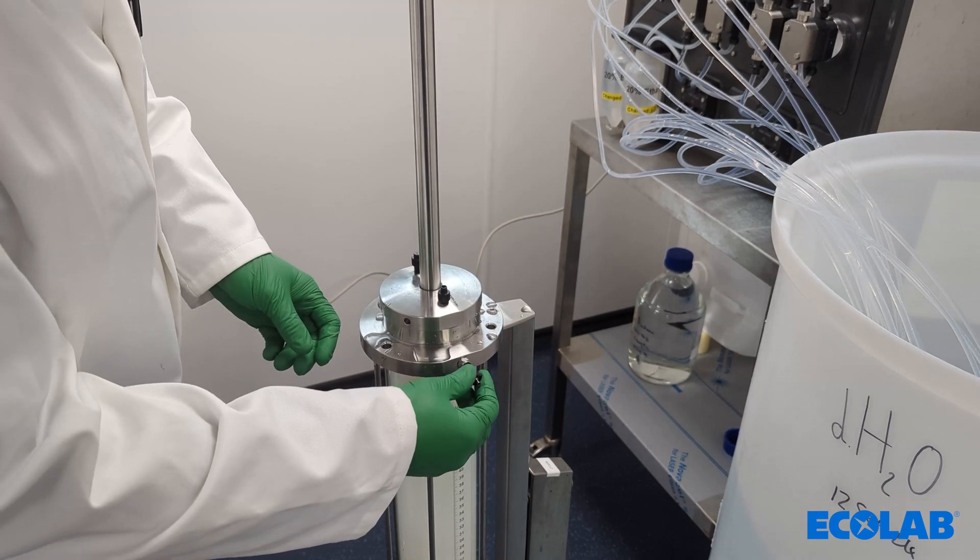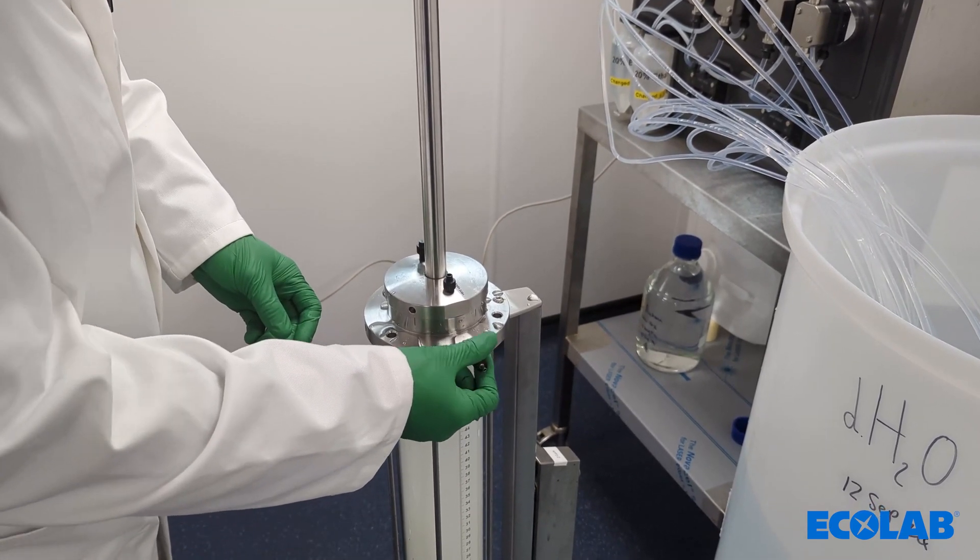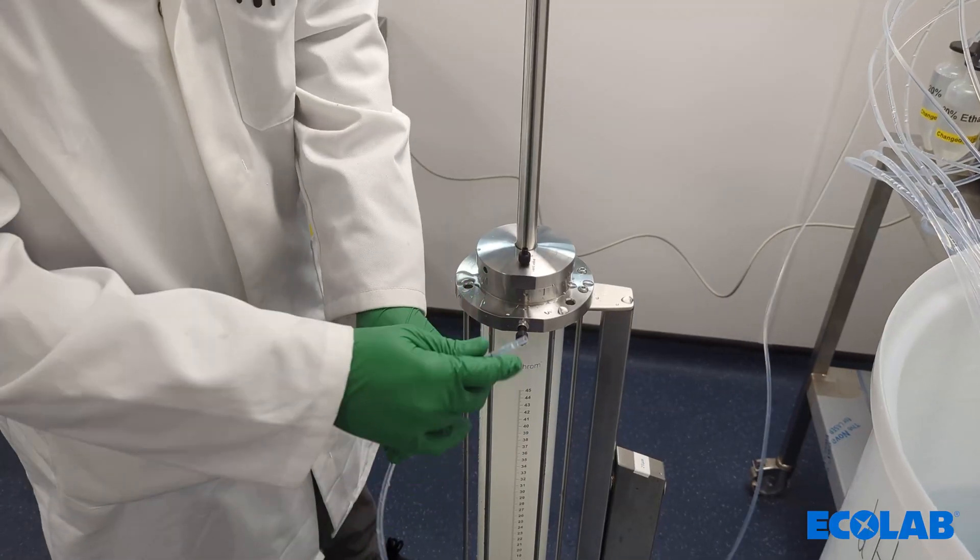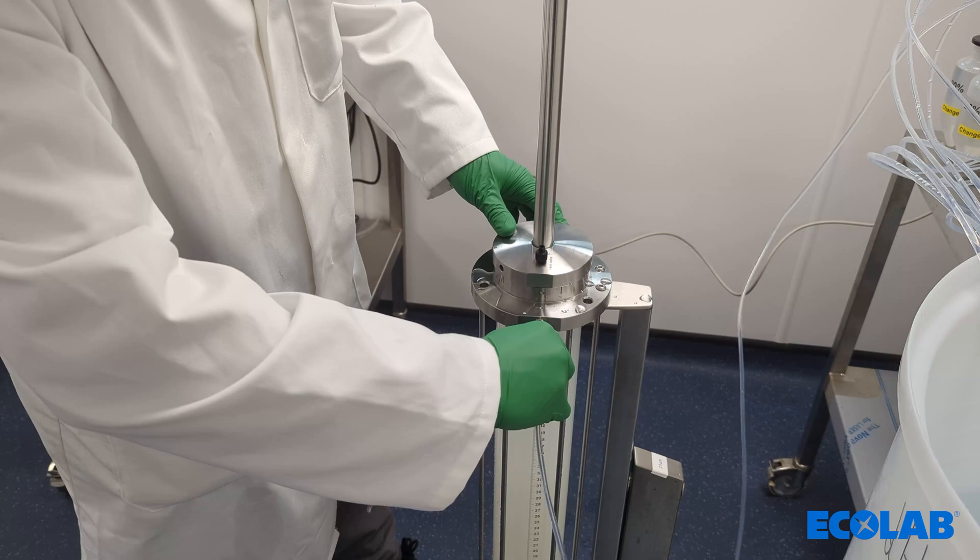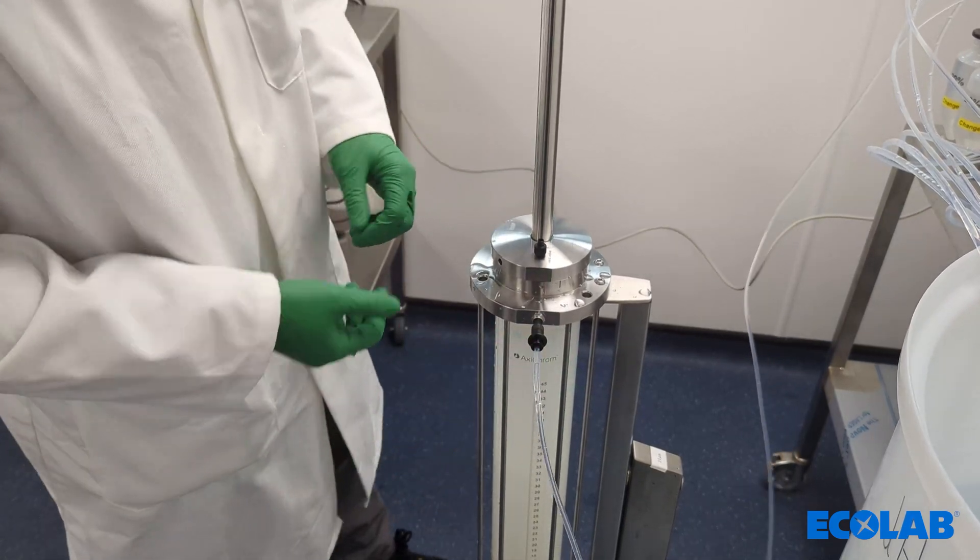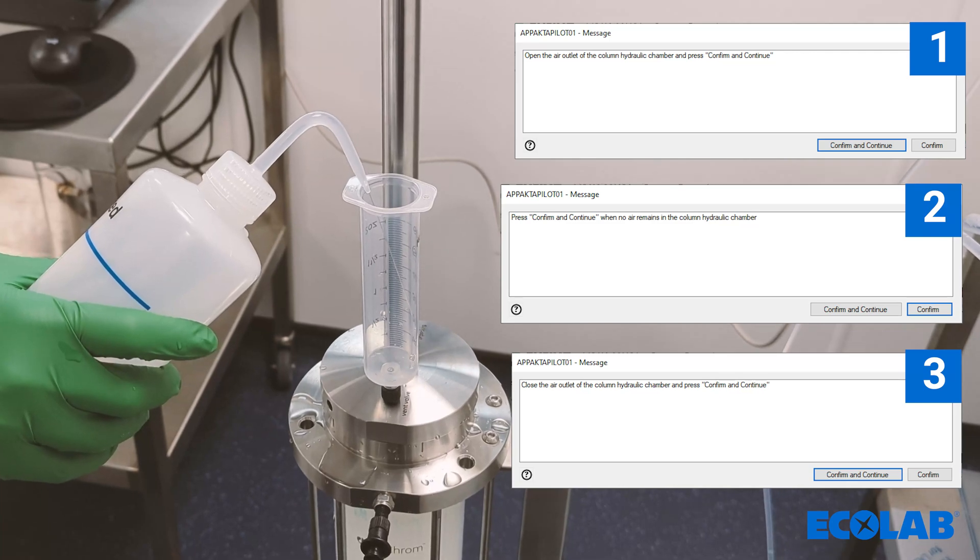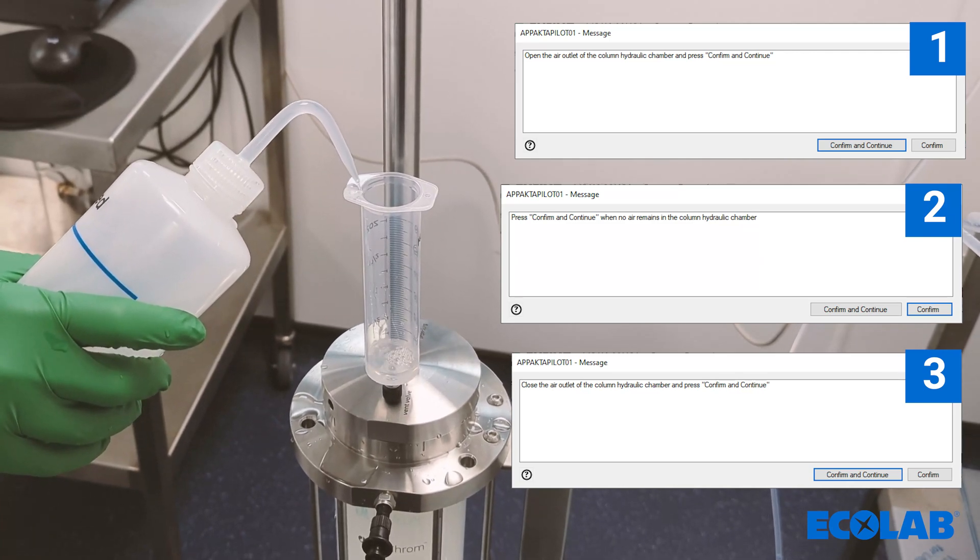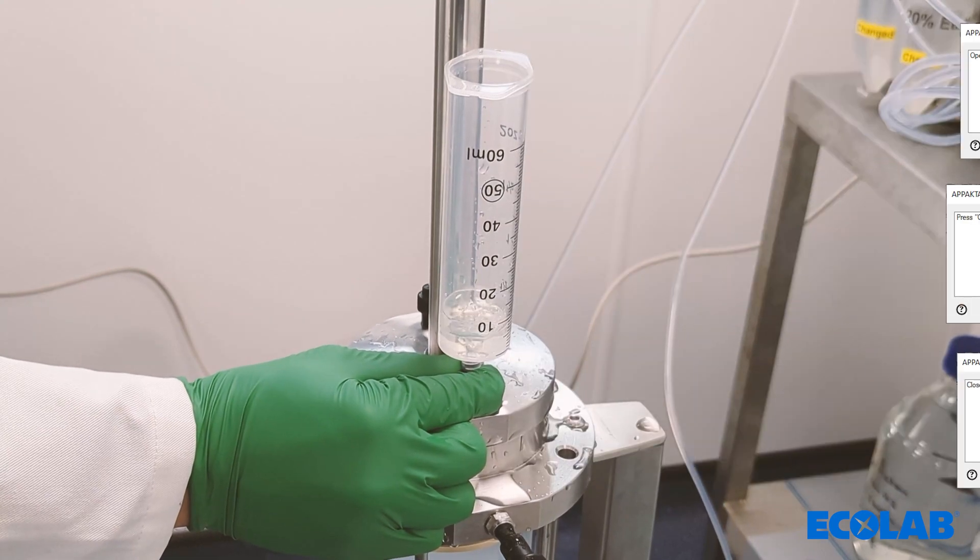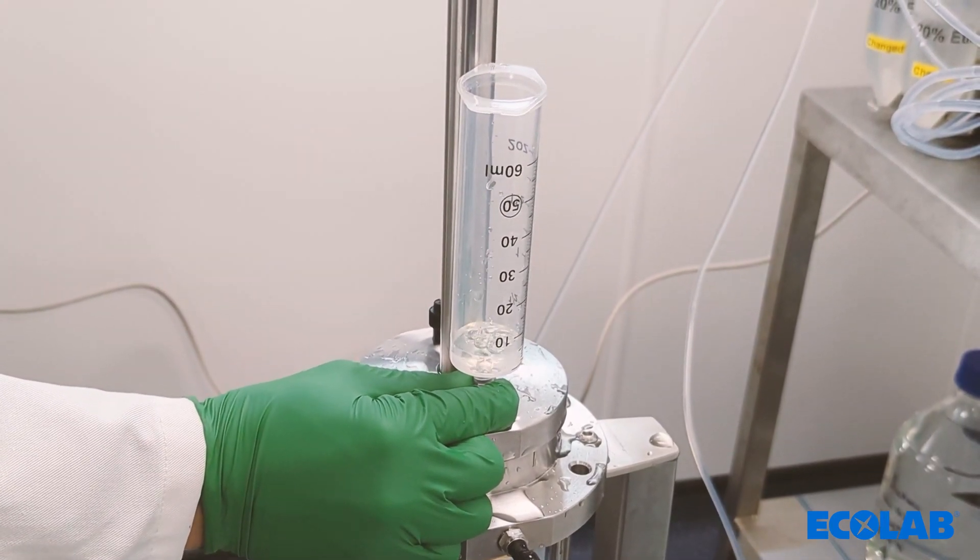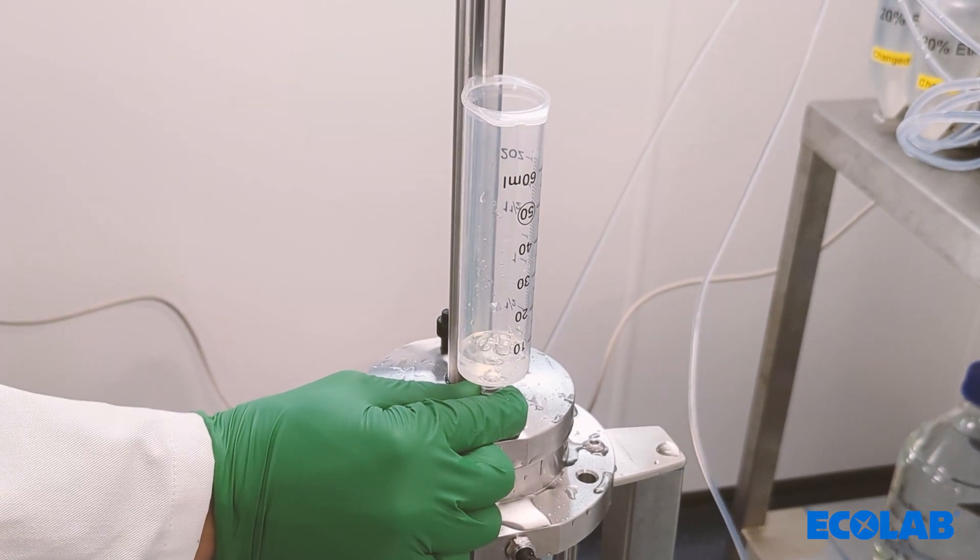Connect the intelligent packing line to the column. The intelligent packing will give you instructions for the priming. This involves opening the vent valve and allowing the air to be displaced by the liquid before once again closing the vent valve. It can be easier to use an open syringe with water as shown in the video to see the bubbles stop, indicating the complete removal of air.